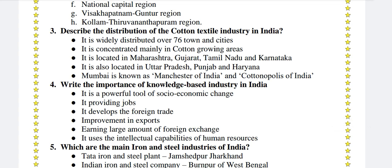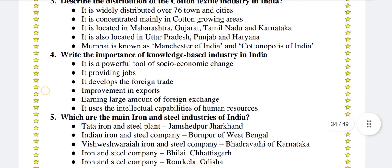Describe the distribution of the cotton textile industry in India. It is widely distributed over 76 towns and cities. It is concentrated mainly in cotton growing areas. It is located in Maharashtra, Gujarat, Tamil Nadu and Karnataka. It is also located in Uttar Pradesh, Punjab and Haryana. Mumbai is known as the Manchester of India and Cotton Polis of India.